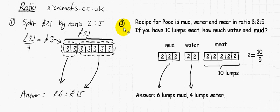Example 2, there's a recipe for poo, is mud, water, and meat. And the parts of the recipe are split in the ratio 3 to 2 to 5. That means 3 parts of mud, 2 parts of water, and 5 parts of meat.